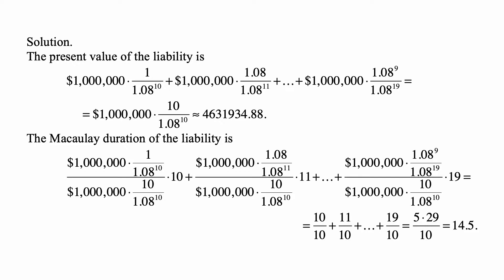So there are 10 payments. Therefore, this is equal to 1 million times 10 divided by 1.08 to the tenth, that's approximately equal to 4,631,934.88. That's the present value of the liability.